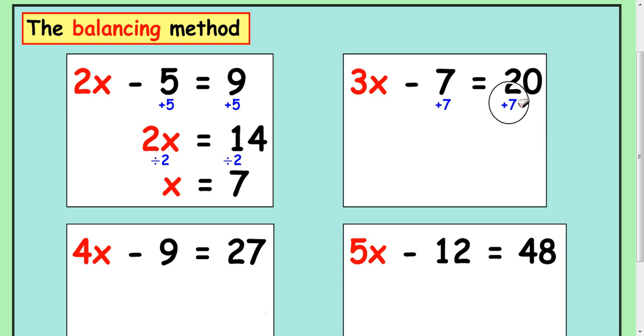Add 7 to both sides. And then you're left with 3x here. So that's going to be 20, add 7, it's 27. And you can see to get 1x, we divide by 3. So that's 9.